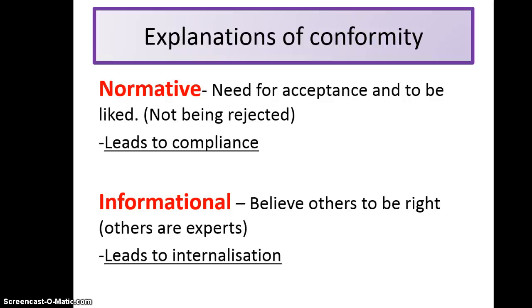The first explanation, normative, leads to compliance because we as human beings all have the basic need to want to feel accepted and liked. So when we come across a new environment and we don't know anybody, we don't want to be rejected — we tend to change our behaviour so we can be accepted by the group. That's why it leads to compliance: even though we may not genuinely believe in what they're doing, we change our behaviour in public, but privately we don't believe it.